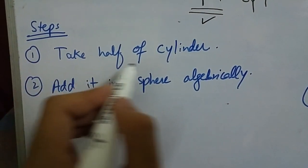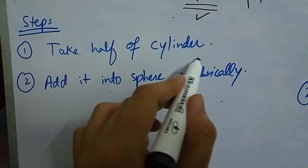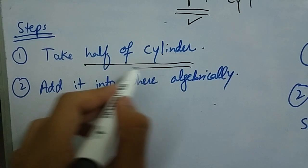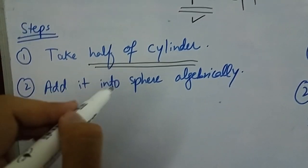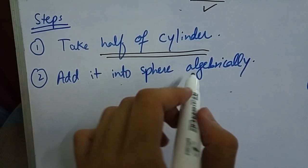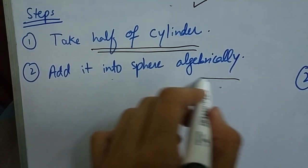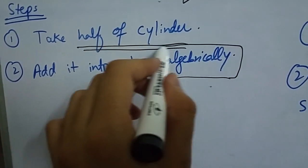The number one step is take half of cylinder, the amount of cylinder that is present in the prescription. And then add it into sphere algebraically. An important point to consider is that you have to add it algebraically.